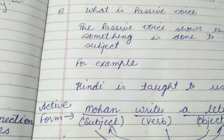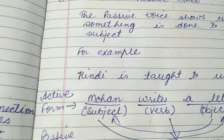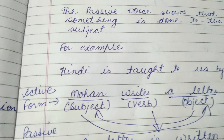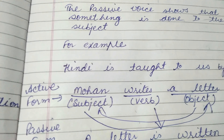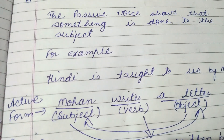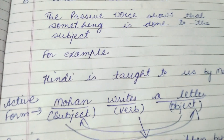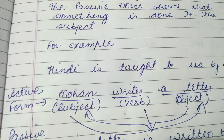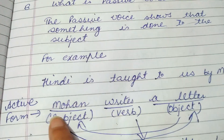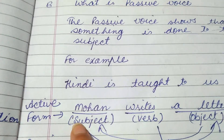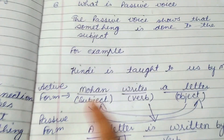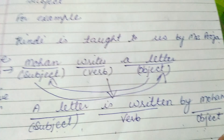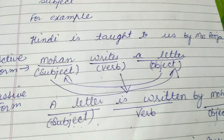One more example: 'Mohan writes a letter.' This sentence is in active form because Mohan, the subject, is doing the work. Mohan is the doer of the action 'write', and 'a letter' is the object receiving the effect. When we change it to passive form, the object comes to the place of subject: 'A letter is written by Mohan.'